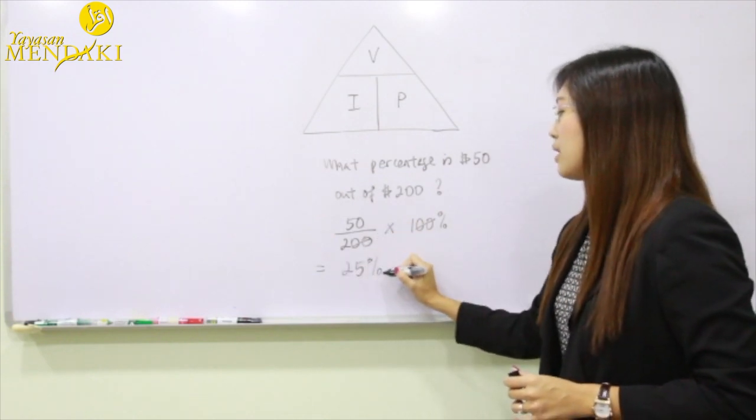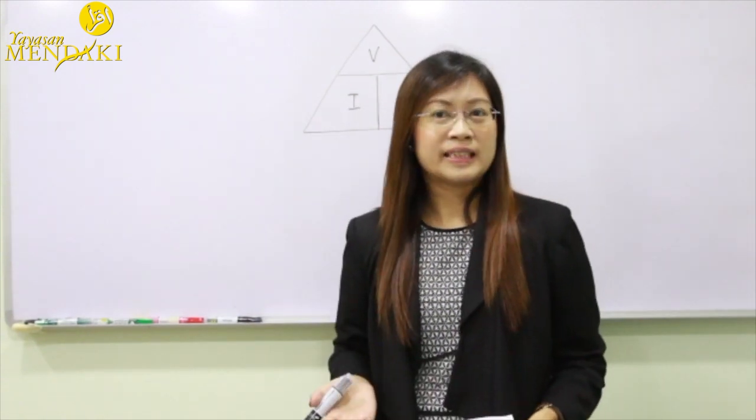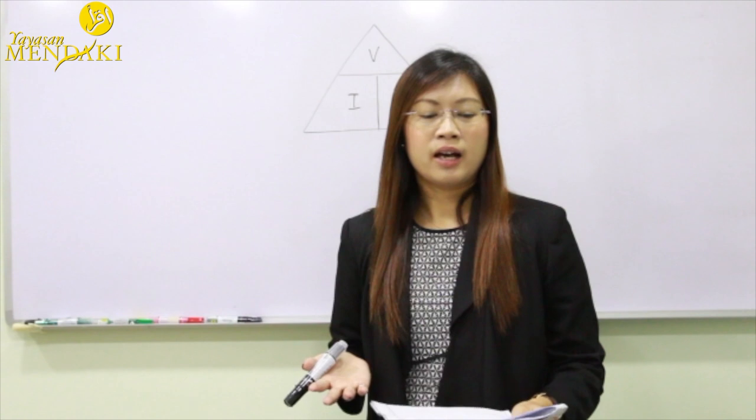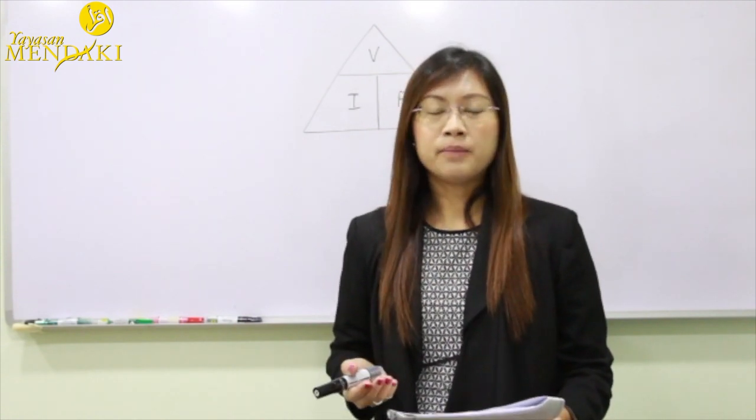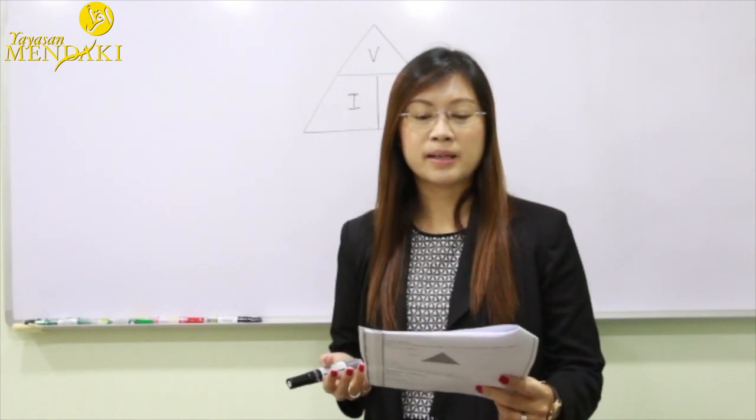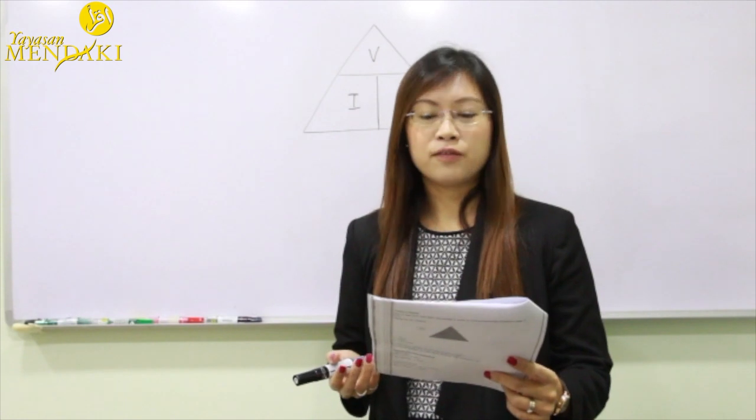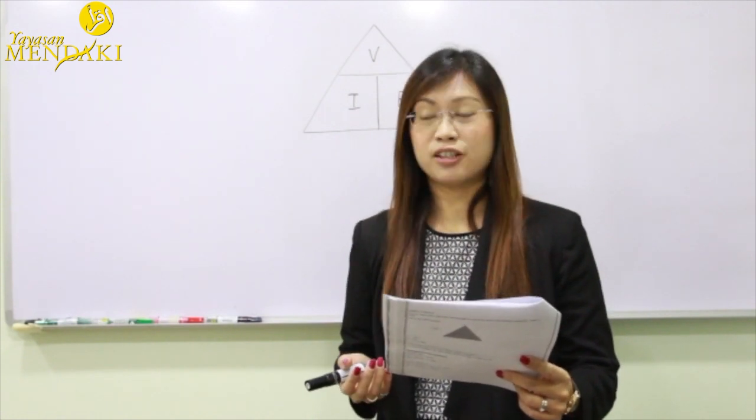Let's take a look at a third example where we are going to find the initial value using the VIP method again. For example, in a school, 25% of the teachers teach basic math. If there are 50 basic math teachers, how many teachers are there in the school?